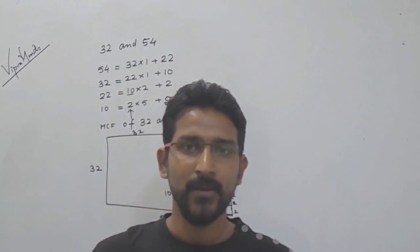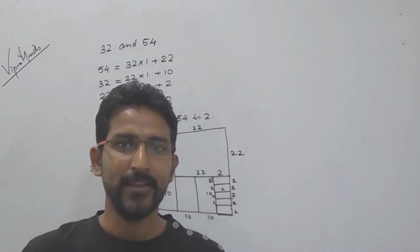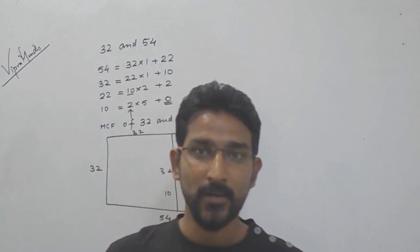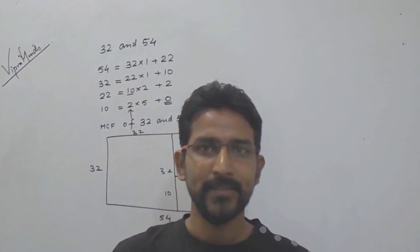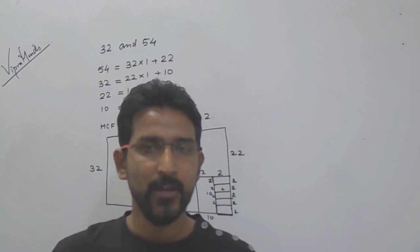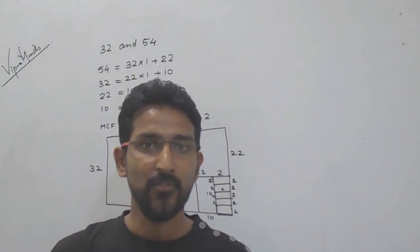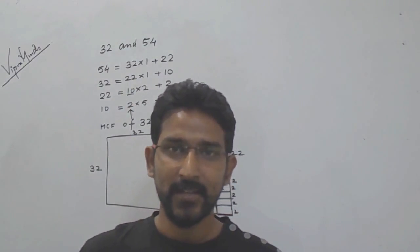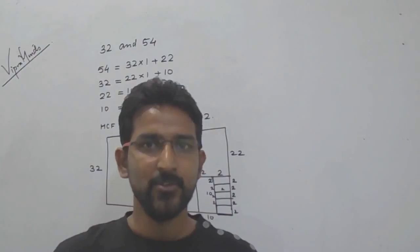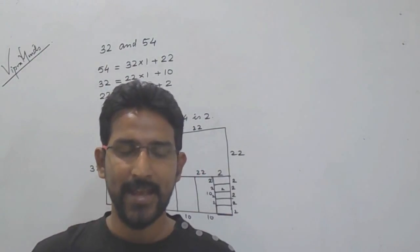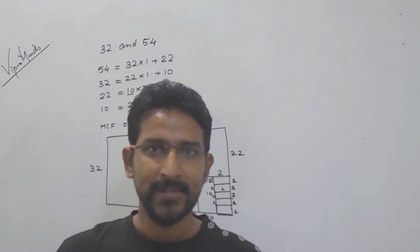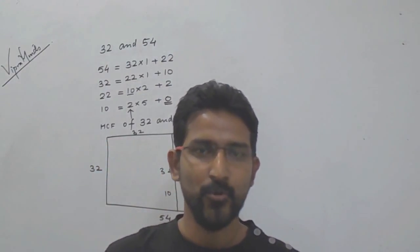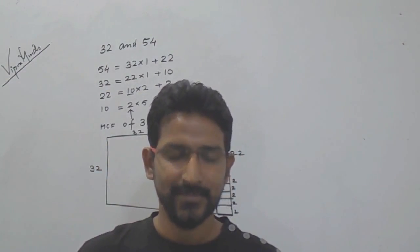This is how we can calculate HCF of two numbers using Euclid's division algorithm. In the next session, we are going to see how we can calculate HCF of three numbers using Euclid's division algorithm. Till then, practice this type of problem. Hope you have understood. Thank you.